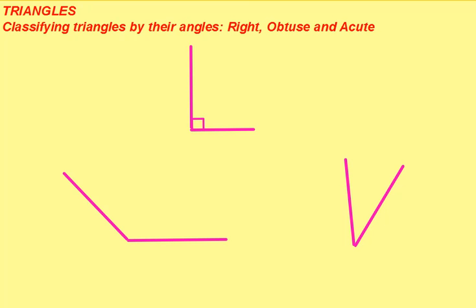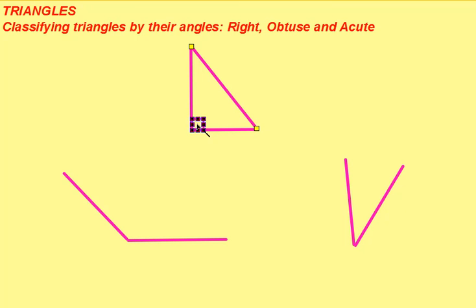You can classify triangles either by their angles or by their sides. Let's begin with angles. This is a right angle. If we connect their line segments, we now have a right triangle, which by definition has one right angle.